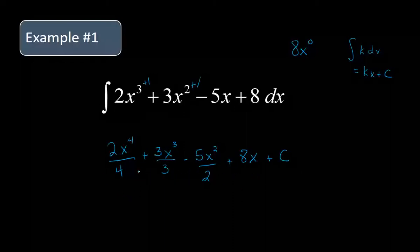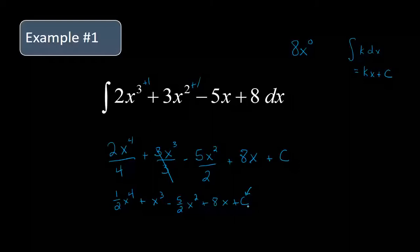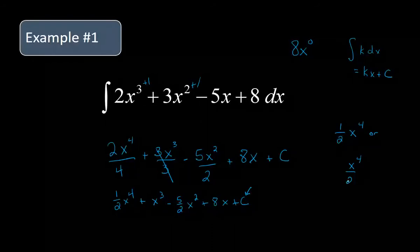Now let's simplify if we can. This is going to be one half x to the fourth. The threes will cancel here, so we'll have x cubed, minus five halves x squared, plus 8x, and then plus C. A couple things to remember: the plus C — when these are new, that's number one everyone forgets. Also, how you write your fraction: either as a coefficient, one half x to the fourth, or x to the fourth over two — either one is fine.